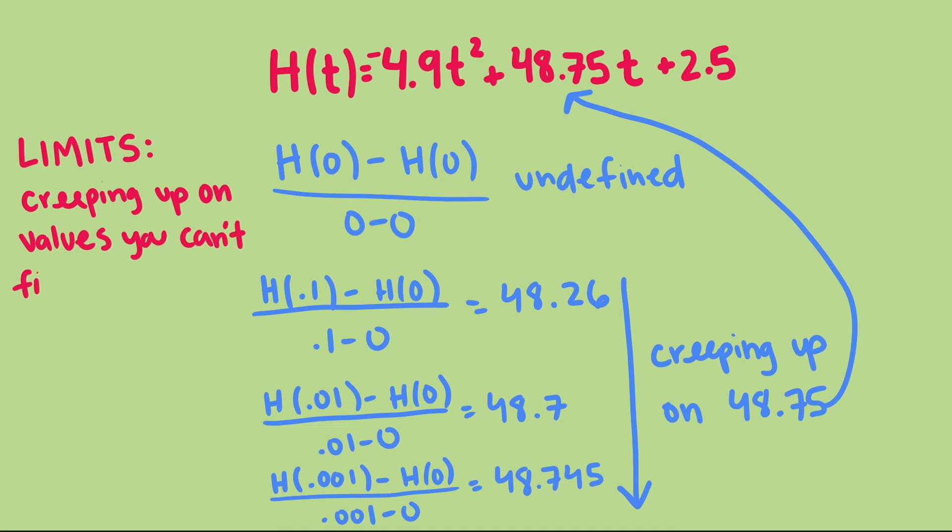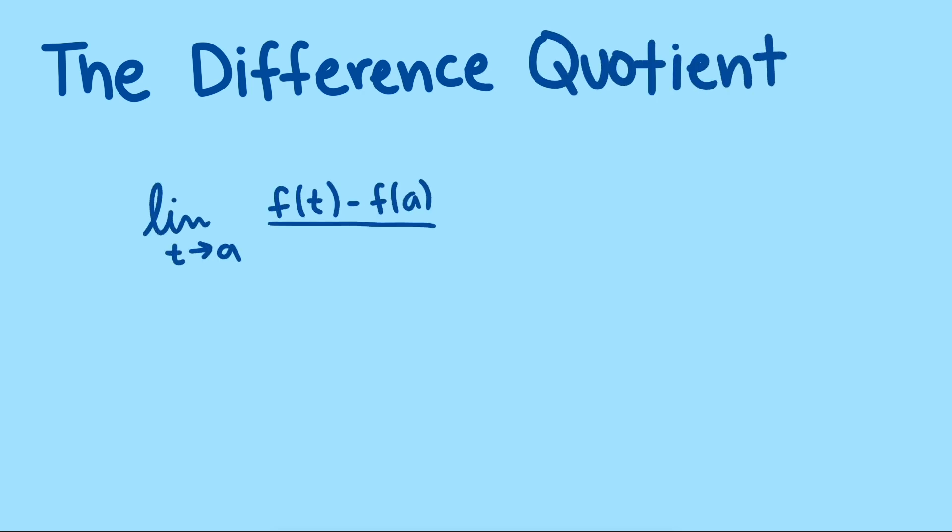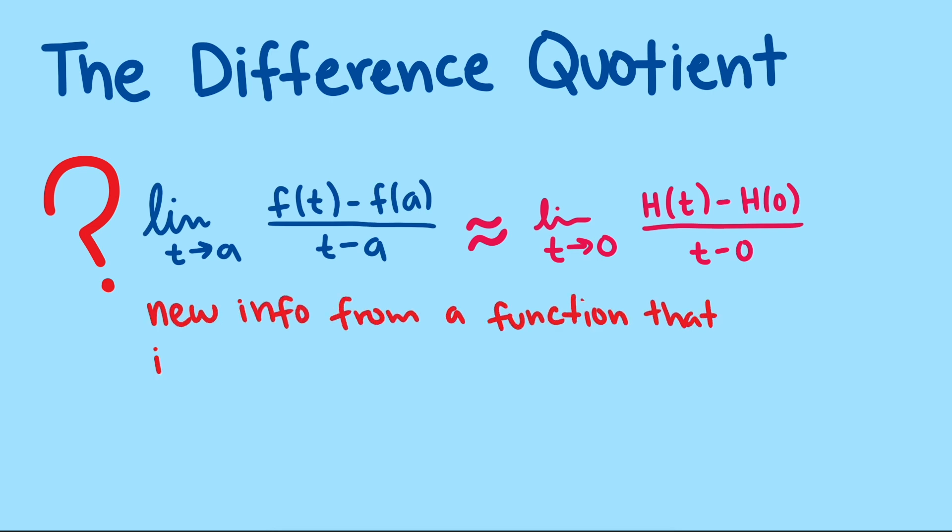Limits are the basis for calculus. The two other central ideas in calculus, derivatives and integrals, are two special limits that answer important questions when analyzing quantities. The derivative limit is sometimes called the difference quotient, and is sometimes written this way, which is the same expression we used, but with a function called h instead of f, and the value a was equal to zero. So why is this limit so important? Because it allows us to get new information from a function that the function itself doesn't contain. That new information is about the rate that one variable is changing with respect to another.